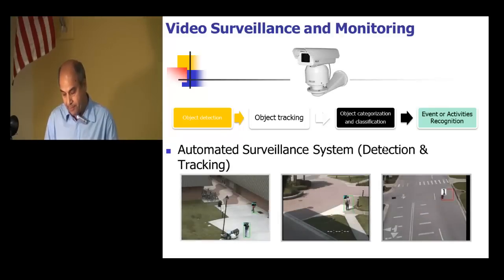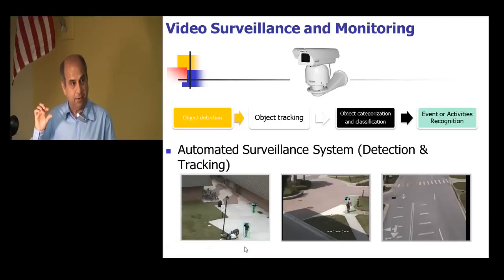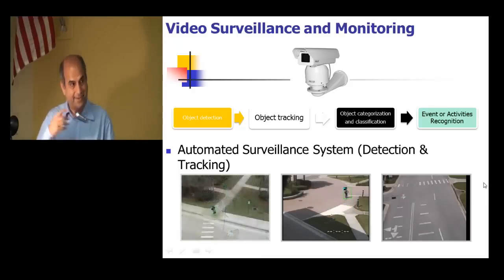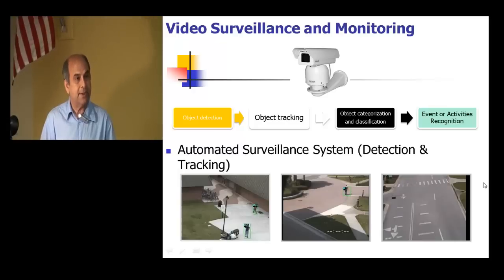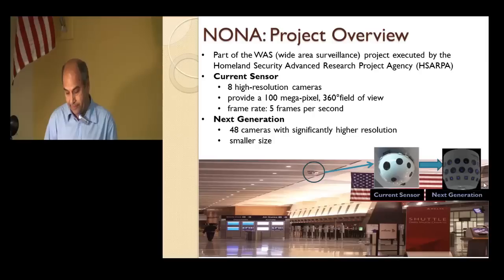Here are some examples at UCF — we have a camera looking at people, we detect them, put bounding boxes around them, and track them. We have systems which do that. We'll learn some basic techniques in this class: how to identify moving objects and how to track them.